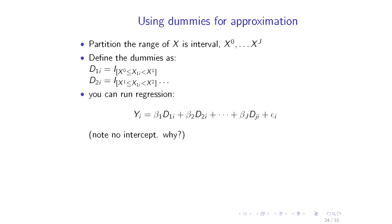Why omit the intercept? If you include an intercept and all the dummies, you get perfect multicollinearity — it won't run. You could instead include the intercept and omit one dummy, making everything relative to that omitted category — which is exactly the same as running without the intercept. When you run this regression, you're basically estimating the mean y at each interval level, giving you a step function.